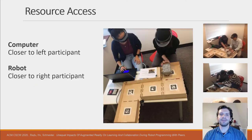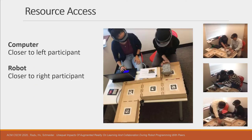Participants had slightly imbalanced access to resources due to their location in the room where the computer was closer to the left participant and the robot was closer to the right participant, although as you can see in the images on the right both participants could easily access both resources.